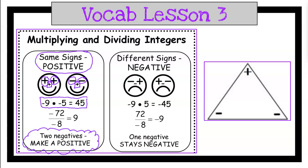Negative 9 times negative 5 is positive 45. I think I said divided by - excuse me - negative 9 times negative 5. And then right here, negative 72 divided by negative 8, remember that fraction means divide, is positive 9.